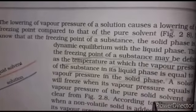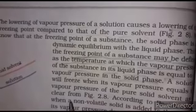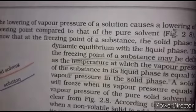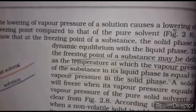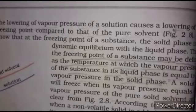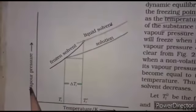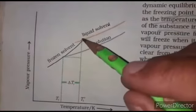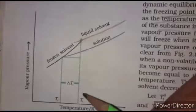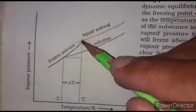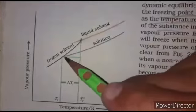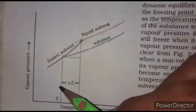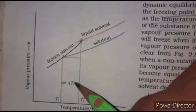As is clear from Figure 2.8, this is shown on a graph of vapor pressure versus temperature in Kelvin. The freezing temperature of the pure solvent is Tf°. When a non-volatile solute is added, the freezing point of the solution shifts lower, and that depression is called delta Tf.